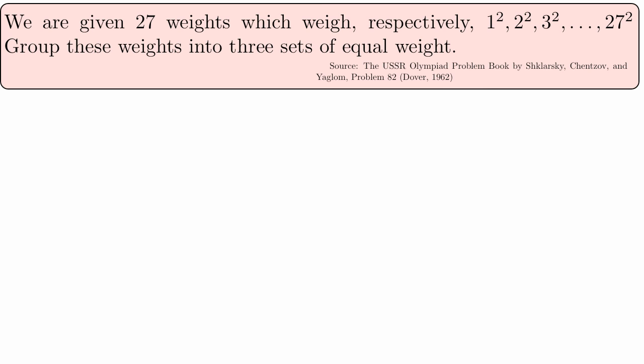Here's a problem. We're given 27 weights which weigh, respectively, 1 squared, 2 squared, 3 squared, all the way up to 27 squared. We have to group these 27 weights into 3 sets of equal weight.